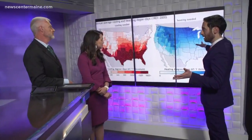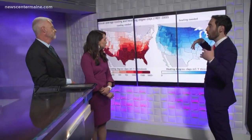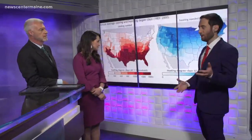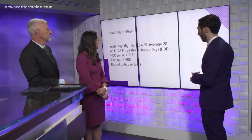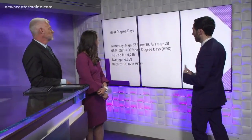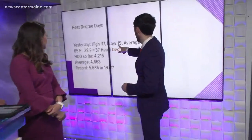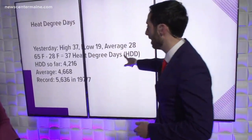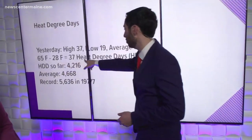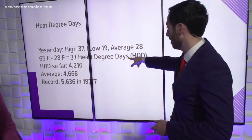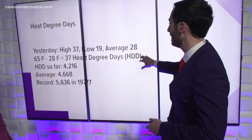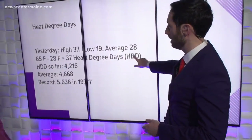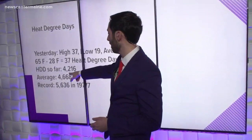You can see that Maine and North Dakota are some of the highest heating degree day places, meaning they need the most fuel in the country. To show how we calculate it: yesterday's high was 37, low was 19, so the average temperature is 28. Take 65 minus 28 — that's 37 heating degree days, or HDDs.